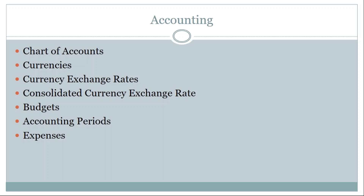Consolidated exchange rates are also relevant but slightly different from standard exchange rates. Budgets are also managed in NetSuite — in the US market there are four quarters per year, and budgets are created for each quarter so that at the end of the year, you can get a real picture of budget usage and income.